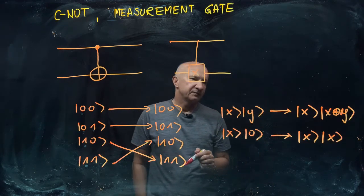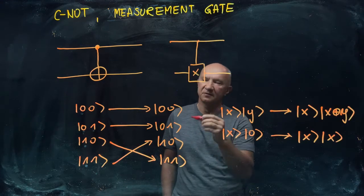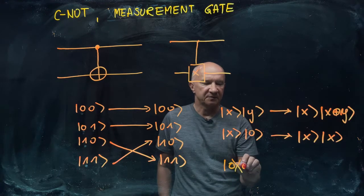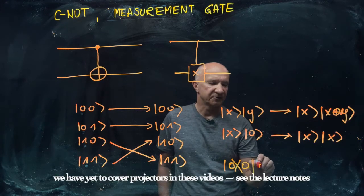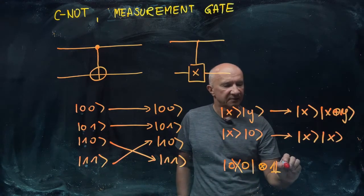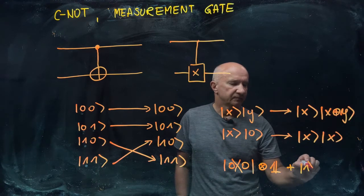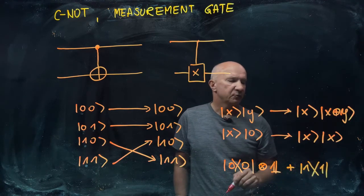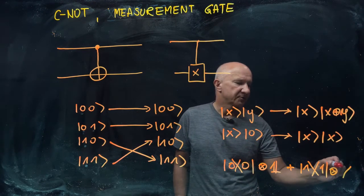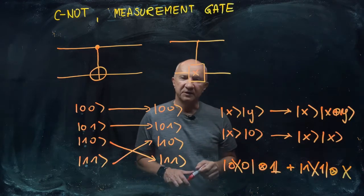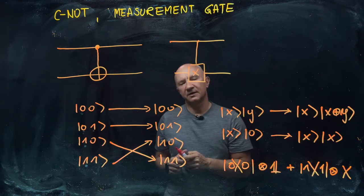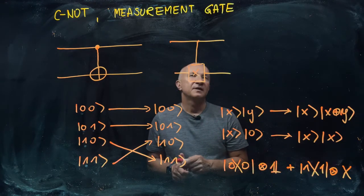Yet another way of writing this gate is as follows: if the first qubit is in state zero—that's a projector on zero—then do nothing to the second qubit, your target qubit. However, if your first qubit is in state one, apply operation X, the bit flip, to the second qubit. That's another way of writing this operation.